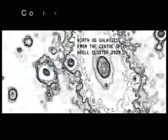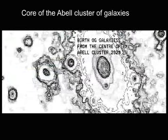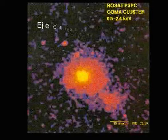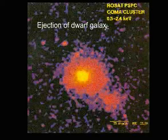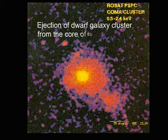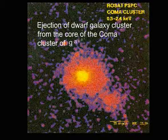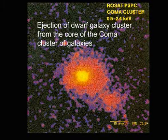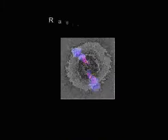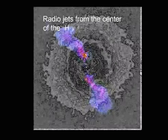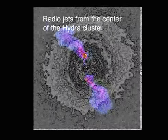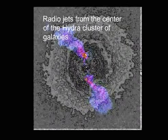Similar to the example of galaxies, clusters of galaxies also evolve by following the path prescribed by the tightening of the universal throttle knot structure. In evolved clusters of galaxies, one should observe similar ejections of dwarf galaxy clusters from the center along the bar axis, as seen in the X-ray image of the Coma cluster. One should also observe radio jets from the center of galaxy clusters, similar to what is seen in elliptical galaxies.